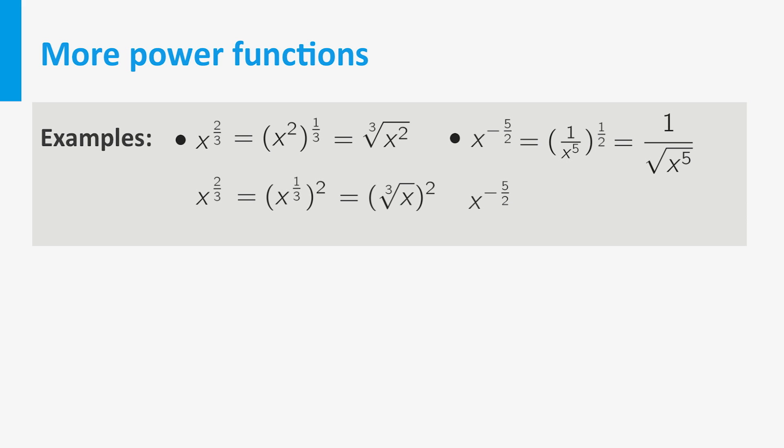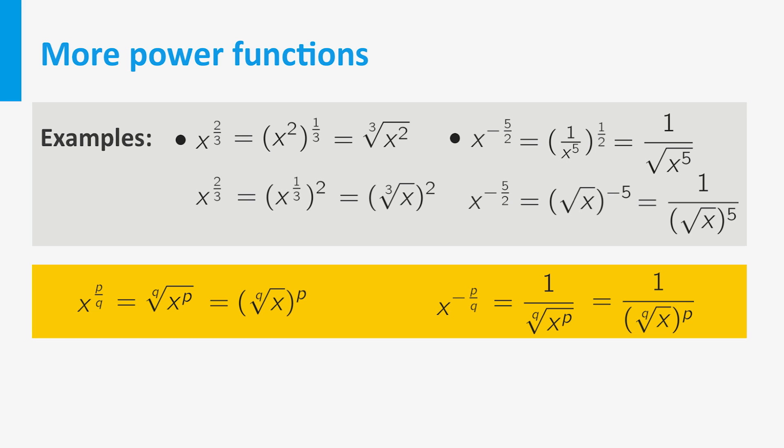In this way, we have defined x to the power p over q with p and q positive integers, as the qth root of x to the power p, or the qth root of x to the power p. And x to the power minus p over q, as 1 over the qth root of x to the power p, or as 1 over the qth root of x to the power p.